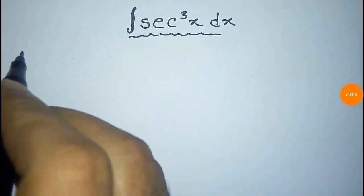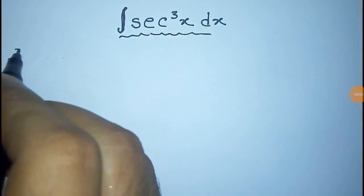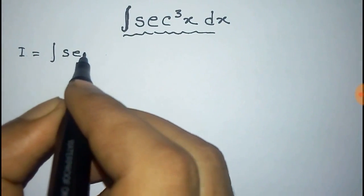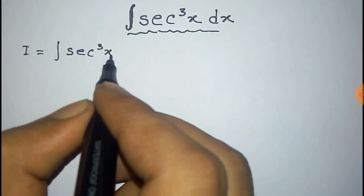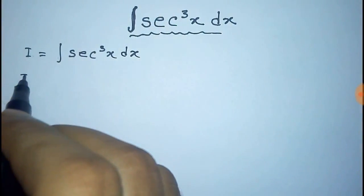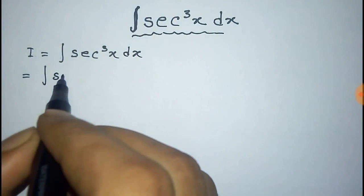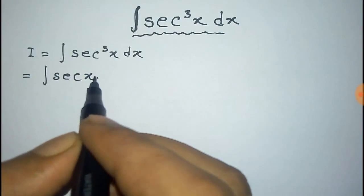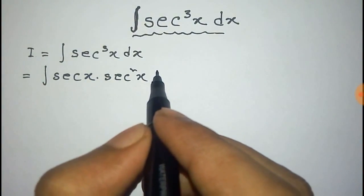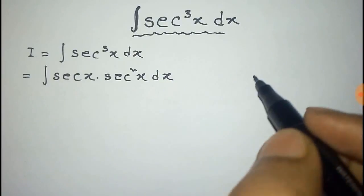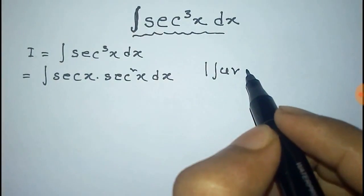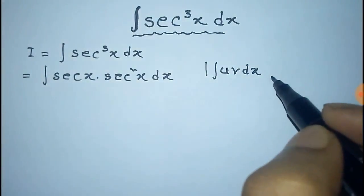We have to integrate sec to the power 3x. For this, we take i equal to the integration of sec to the power 3x dx. Now this sec to the power 3x can be written as the product of sec x and sec square x into dx.